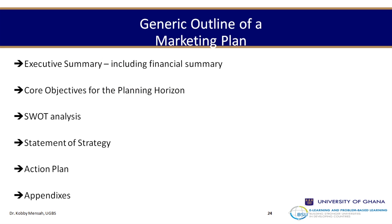The generic outline of a marketing plan includes: an executive summary that sums up the entire plan, objectives, and strategies; core objectives for the plan; a SWOT analysis; a statement of strategy; an action plan; and appendixes.